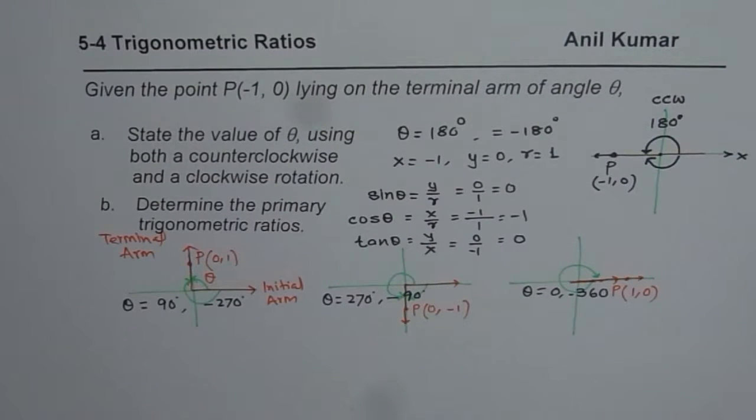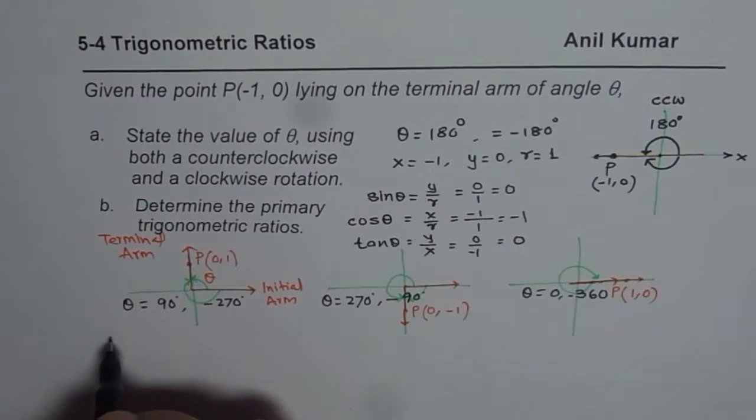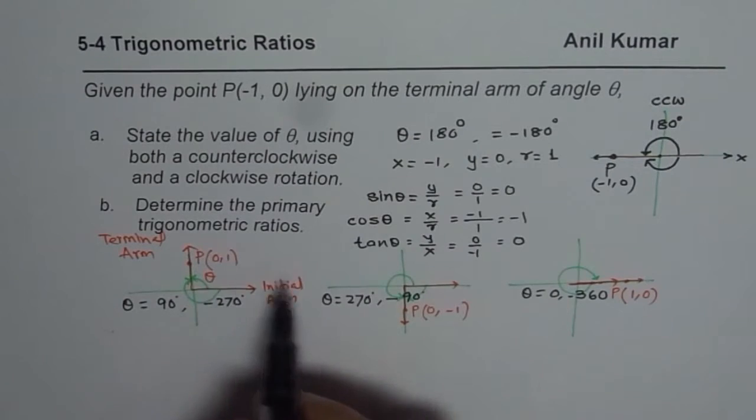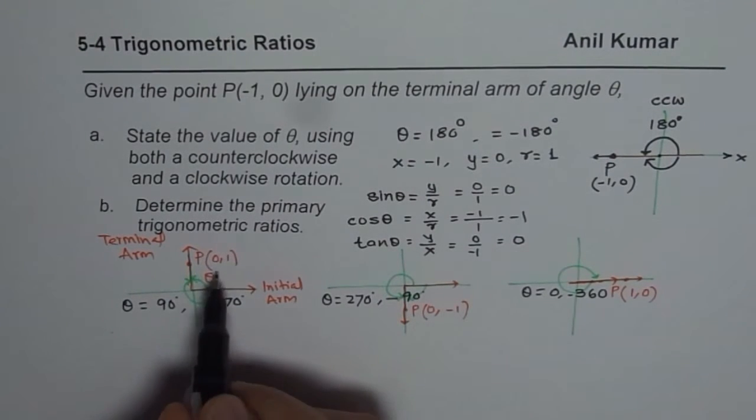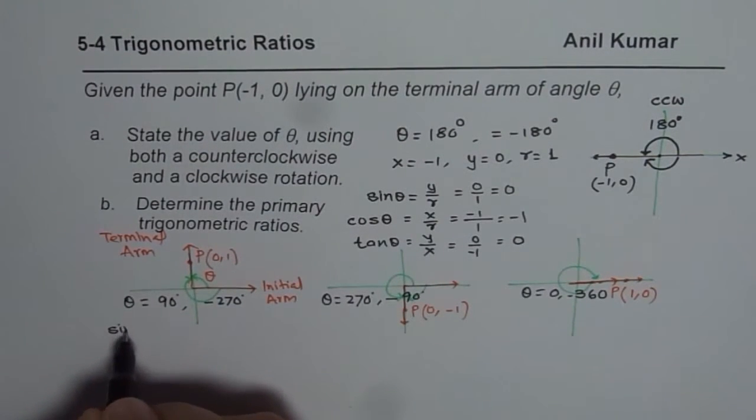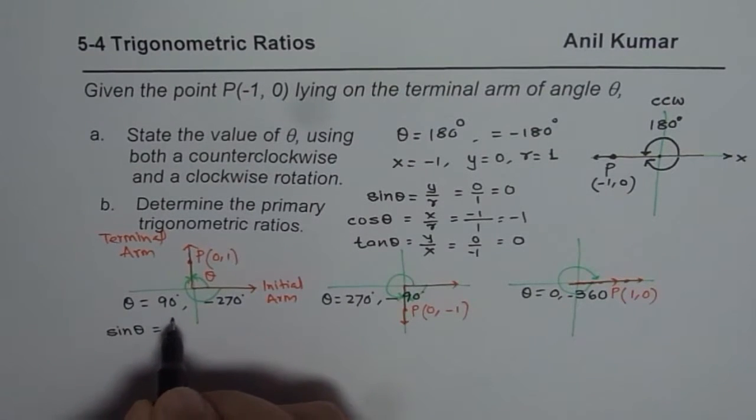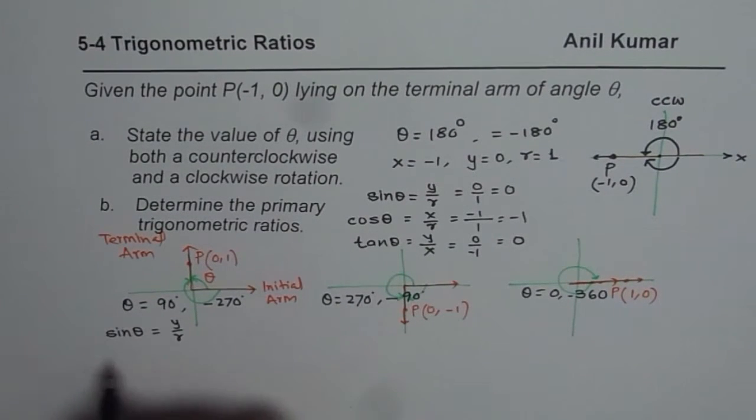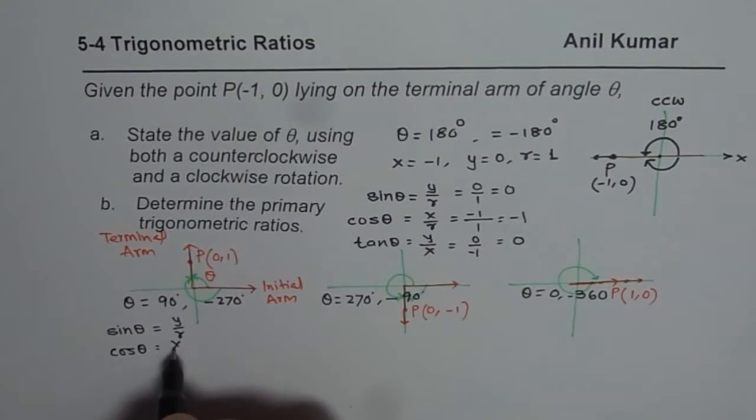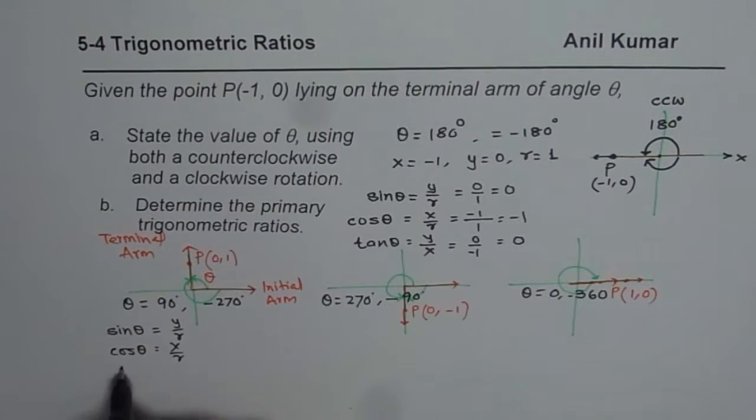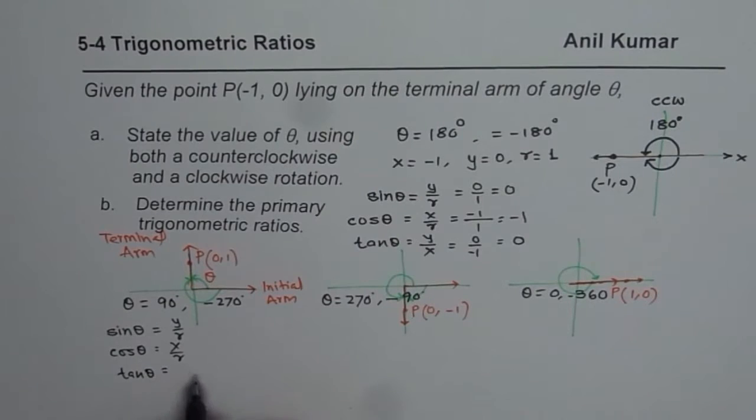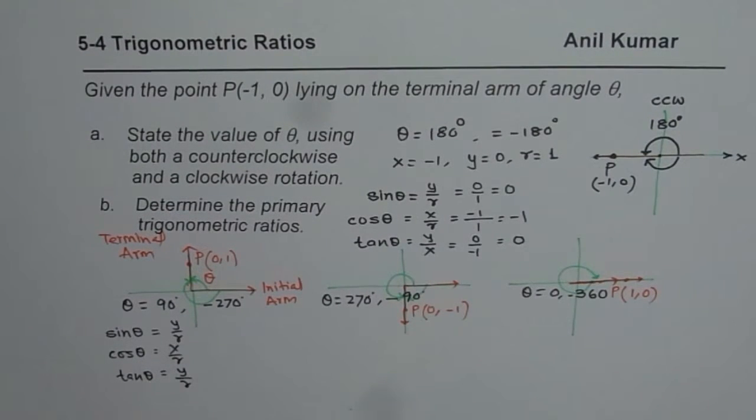So these are the angles. Now let's write down all our ratios. In each case, r value is 1. In general, we will write sin theta as y over r, cos theta as x over r, and tan theta as y over x. That is the general value for any coordinate point given to us.